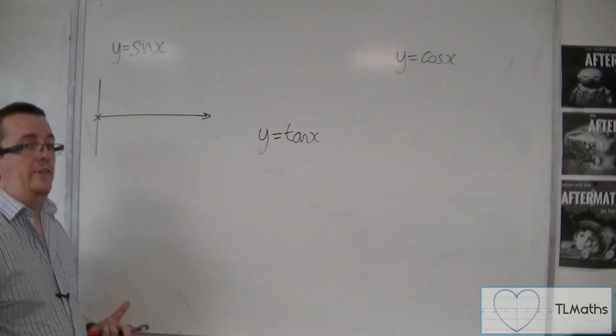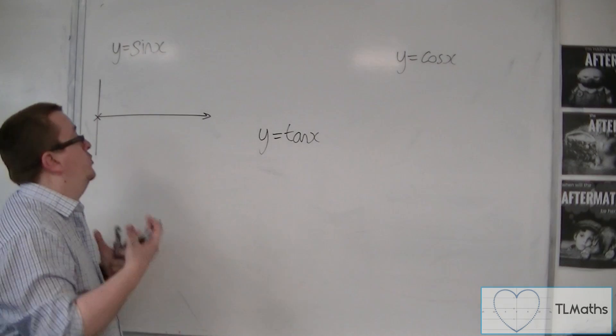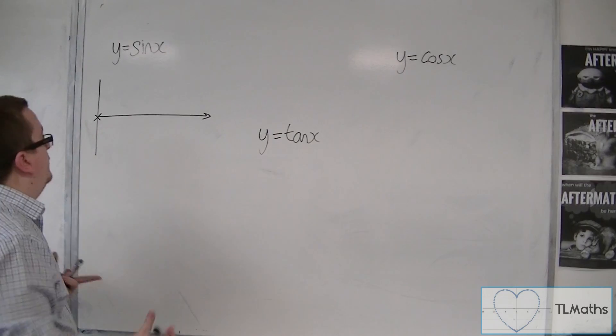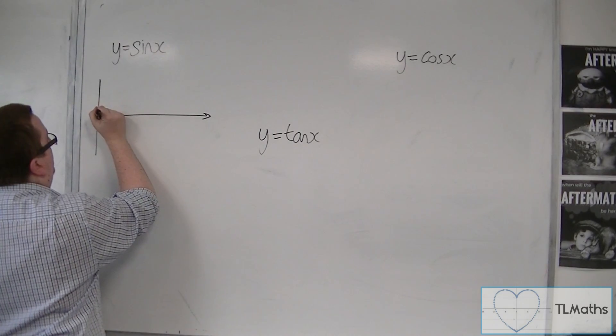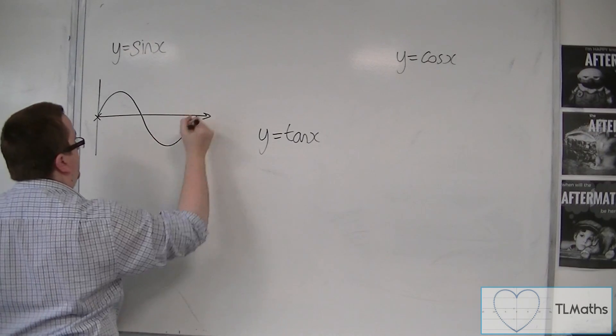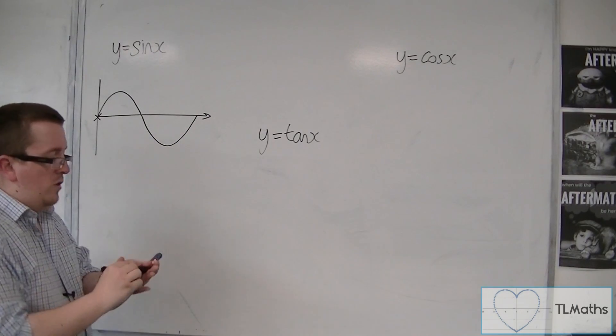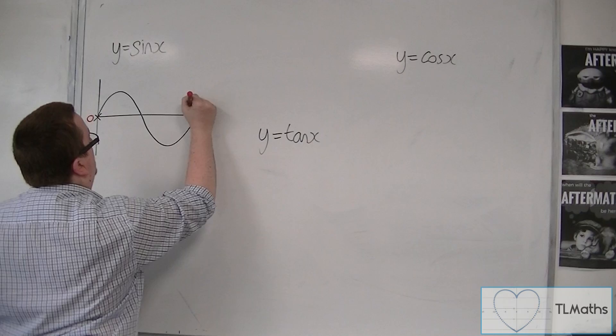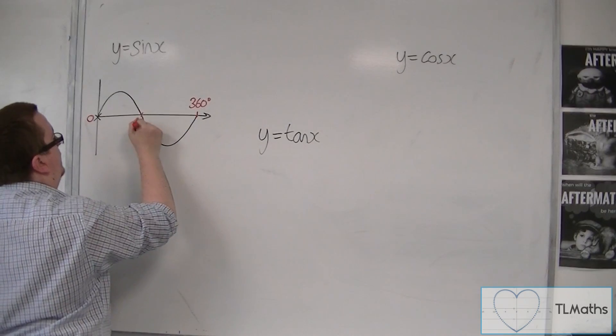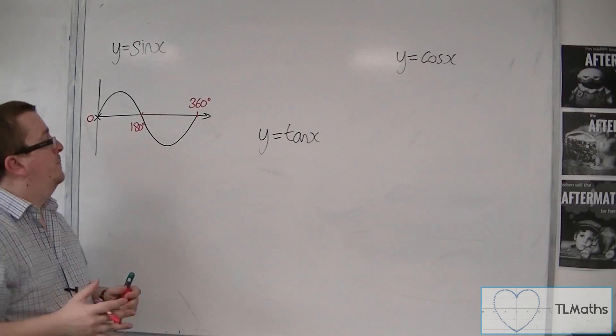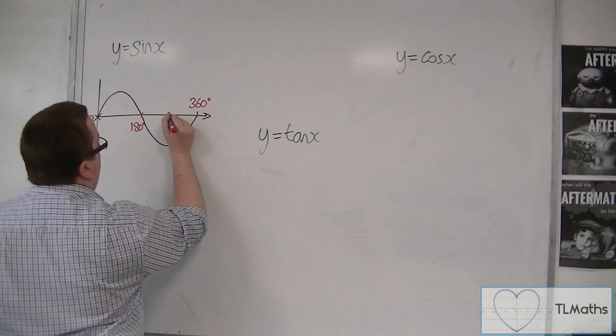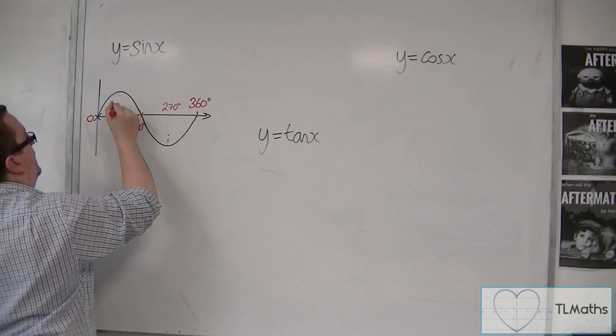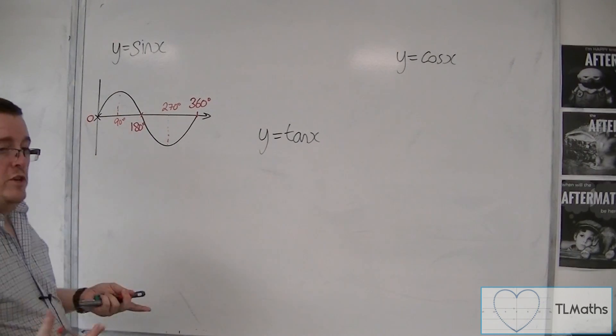If you know what the general shape of one of these curves is, that should immediately identify which is which. The sine curve looks like this between 0 and 360 degrees. There is 0, here's 360 degrees, halfway is 180 degrees. This point here is at 270 degrees, and that point is at 90 degrees. Notice the symmetry of the curve.